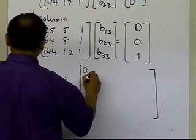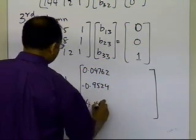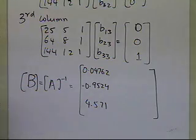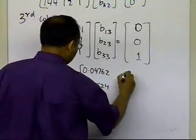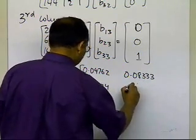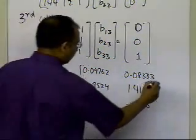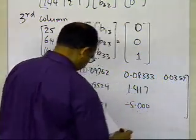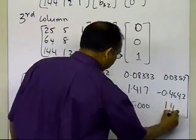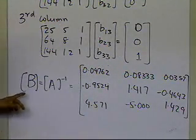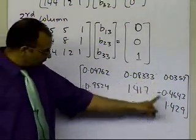The first column, which we fully worked out, is [0.04762, -0.9524, 4.571]. The second column, left as homework, is [0.08333, 1.417, -5.00]. The third column is [0.0357, 0.4643, -1.429]. That is the complete inverse of the A matrix.